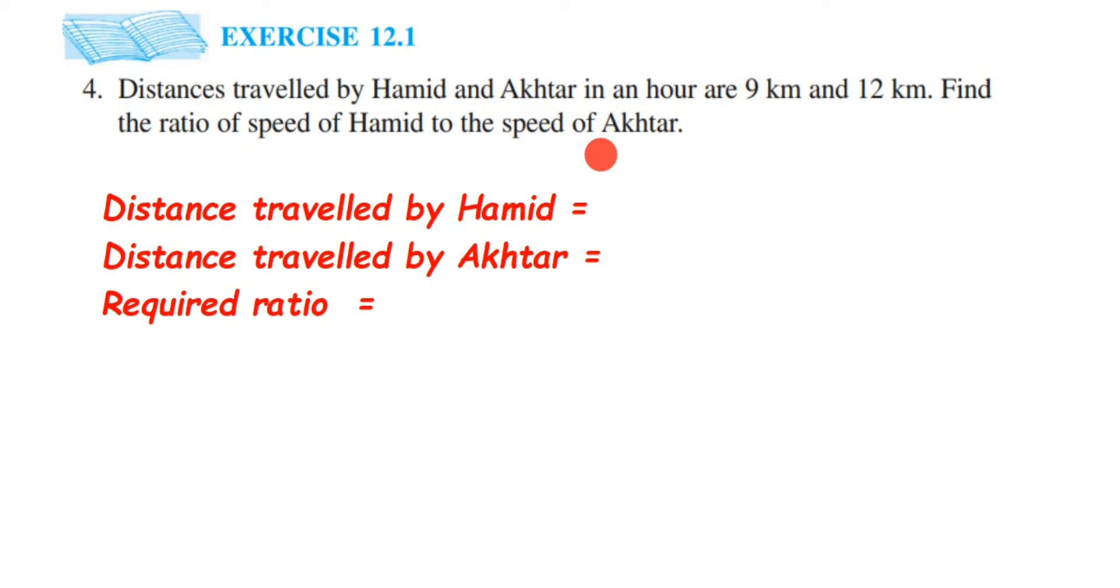by Hamid, which is 9 km, so 9 km per hour, and distance travelled by Akhtar is 12 km, so 12 km per hour. They have not given hours in the units here, but since they are talking about speed, it will become 9 km per hour and 12 km per hour.